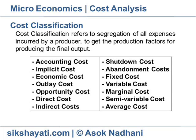Marginal cost refers to the additional cost for production of an additional unit of a commodity. Marginal cost may be classified as short-run marginal and long-run marginal cost. Semi-variable costs include expenses which remain constant up to a certain level of output and then start rising proportionately. These costs arise where there is no proper segregation of whether the cost is fixed or variable. Average cost is the ratio between the total cost of production and the quantity of a given output.